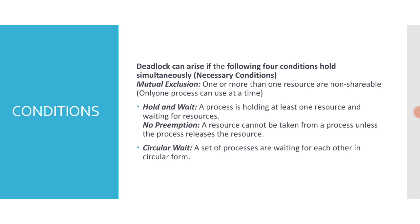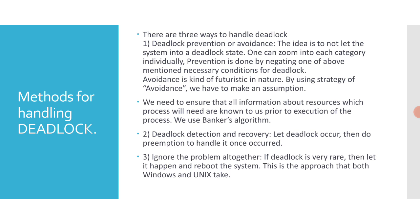There should be a way out — methods for handling deadlock. There are three ways. The first is deadlock prevention or avoidance — the idea is to not let the system get into a deadlock state. Prevention is done by negating one of the four necessary conditions. Avoidance is futuristic in nature; using an avoidance strategy, we need to ensure that all information about resources that each process will need is known prior to execution. We use the Banker's algorithm for this.